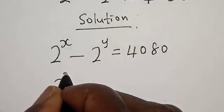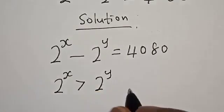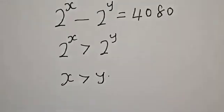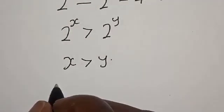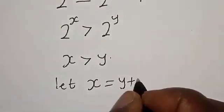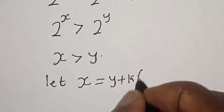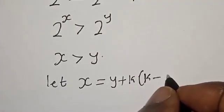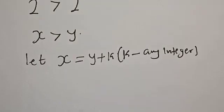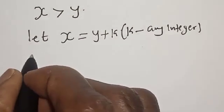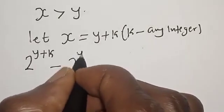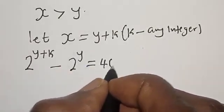Note that 2 raised to power x is greater than 2 raised to power y, then x is greater than y. In this case, we let x equal to y plus k, for k any integer. That is, anywhere you see x, you put y plus k there. Then we have 2 raised to power y plus k minus 2 raised to power y is equal to 4080.